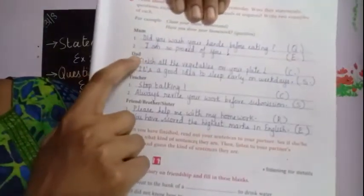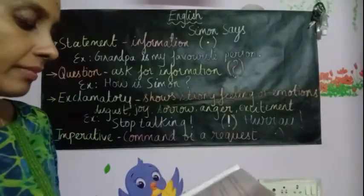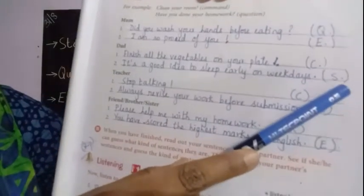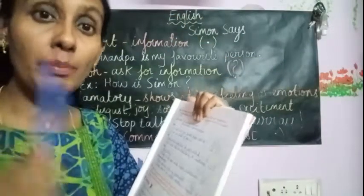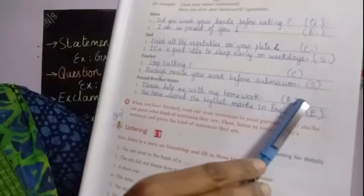My father usually commands me: 'Finish all the vegetables on your plate.' That is a command. Another sentence my dad usually tells me: 'It is a good idea to sleep early on weekdays' — that is a statement, giving information. My teacher usually says 'Stop talking!' — which is a command, though it ends with an exclamatory mark. And 'Always revise your work before submission' — that is a statement.